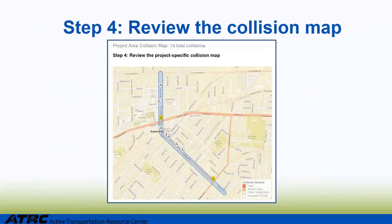After the user defines the limits of their project boundaries, the tool then automatically creates a collision map and scales it to the limits of the project. In this collision map, it shows the location and provides a symbol for each of the past crashes. From the symbol, you can tell whether it's a pedestrian crash or a bicycle crash, and you can also tell the severity of the crashes. In the active live view, users can click on each of the symbols and it will show more crash details, and it will also allow the user to go directly to a Google Street View.